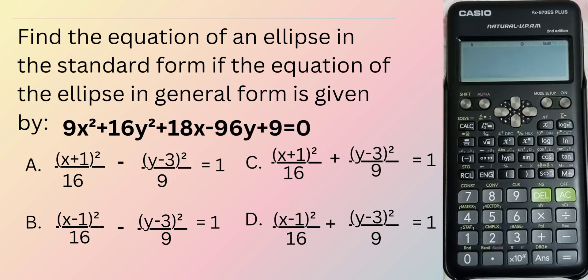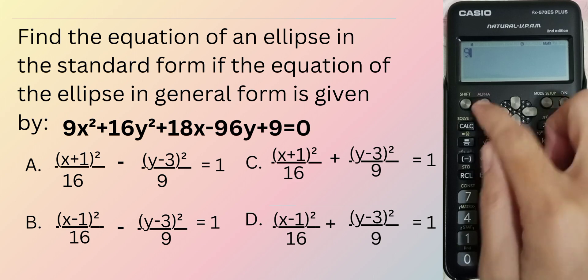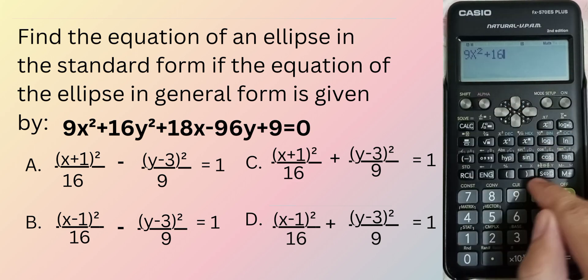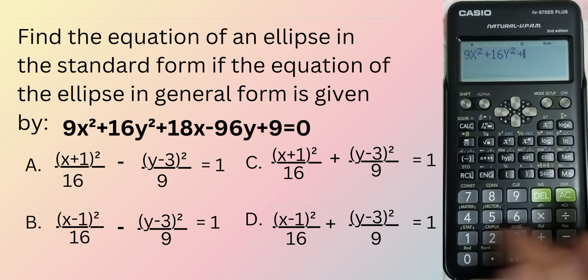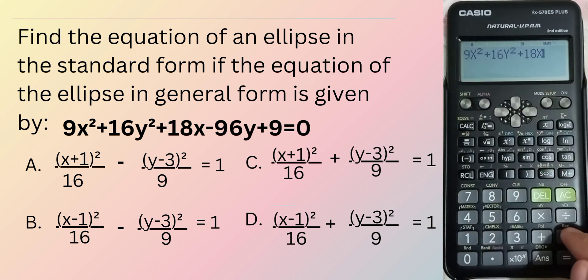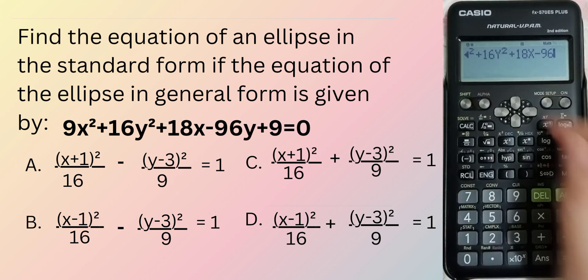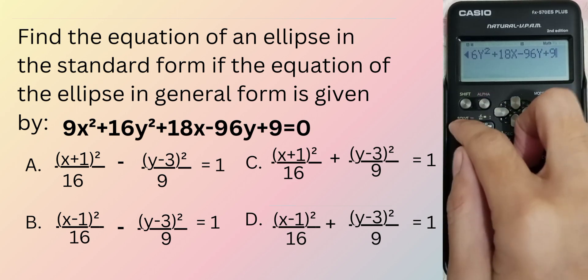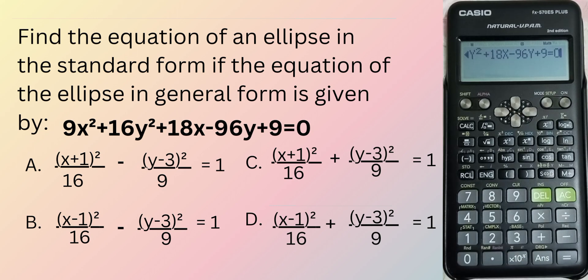Given the general form 9x squared plus 16y squared plus 18x minus 96y plus 9 is equal to 0. We are asked to find the standard form of this ellipse.